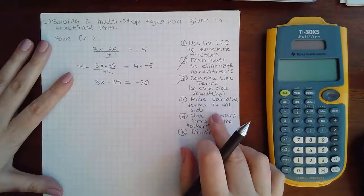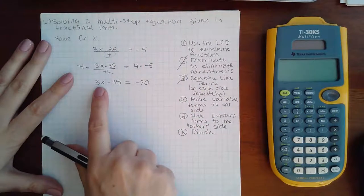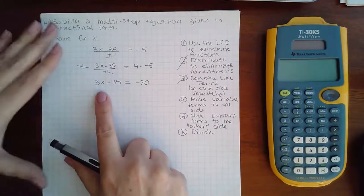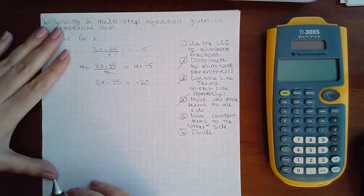Move the variable terms to one side. I only have one variable term in the whole equation, and it's already on a side. So I actually don't have step four either.